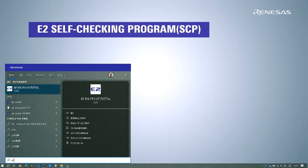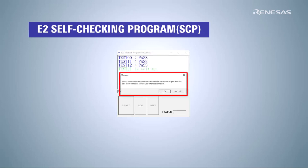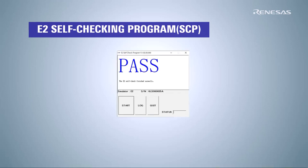Navigate through Programs, Renesas Electronics Utilities, E2 Self-Check Program in the Start menu. Click Start. When the pop-up appears, disconnect the cable from the E2 extension interface and click OK. The pass message will pop up when the self-check of the E2 emulator and the correction of the error in the current consumption measurement are finished.